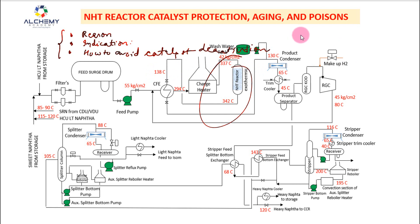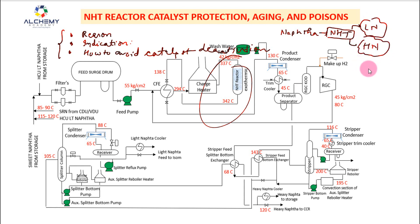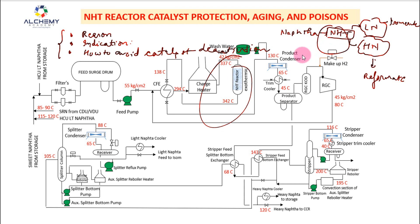As you know, the purpose of the NHT naphtha hydrotreating unit is to hydro-treat the naphtha — whether SRN (straight run naphtha) or CRN. The naphtha processed in the NHT unit yields light naphtha hydrotreated and heavy naphtha hydrotreated. The light naphtha will be fed to the isomerization unit to produce isomerate, and the heavy naphtha will be the feed for the CCR unit to produce reformate.